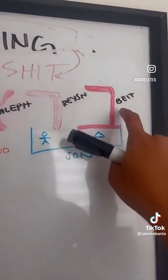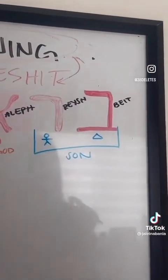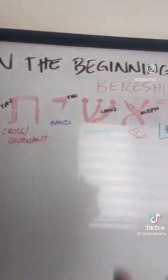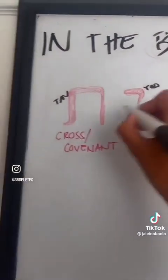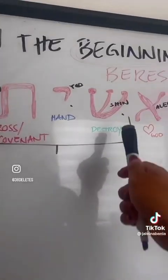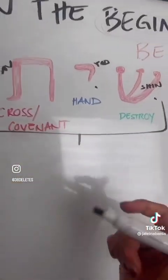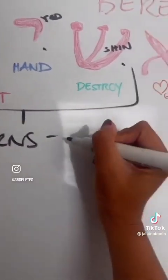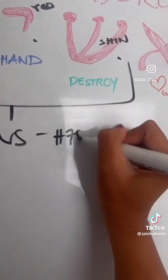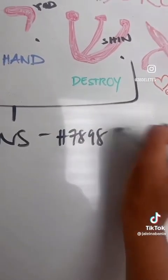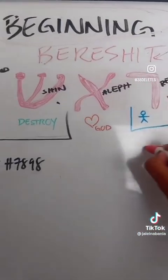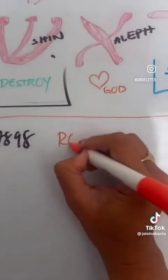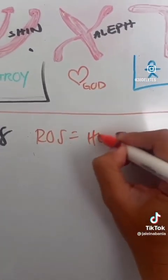Earlier we discussed how Beit and Resh together is pronounced bar, which means son. So there are words within this word. Another one is Shin, Yod, and Tav together — it is read as 'say it', but the English word is thorns. And if you want to look it up, the concordance number is H7898. Next, we have Resh, Aleph, and Shin, which is read as roj, and in English it means head.